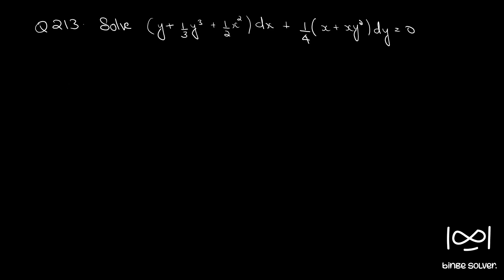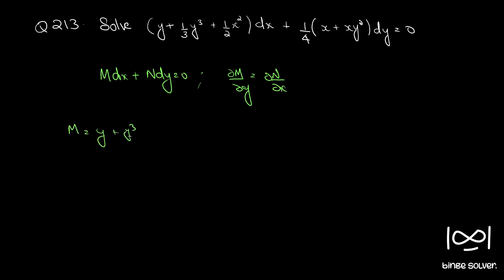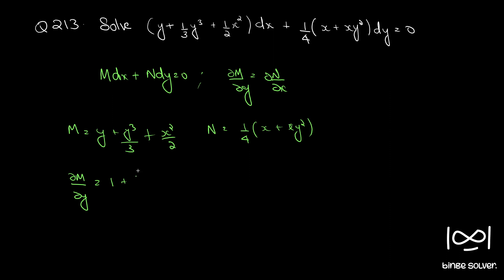The given differential equation is in the form M dx + N dy = 0. First we check whether it is exact using the necessary and sufficient condition ∂M/∂y = ∂N/∂x. Here M is y + y³/3 + x²/2 and N is (1/4)(x + xy²). So ∂M/∂y is 1 + 3y²/3, so that gives 1 + y².